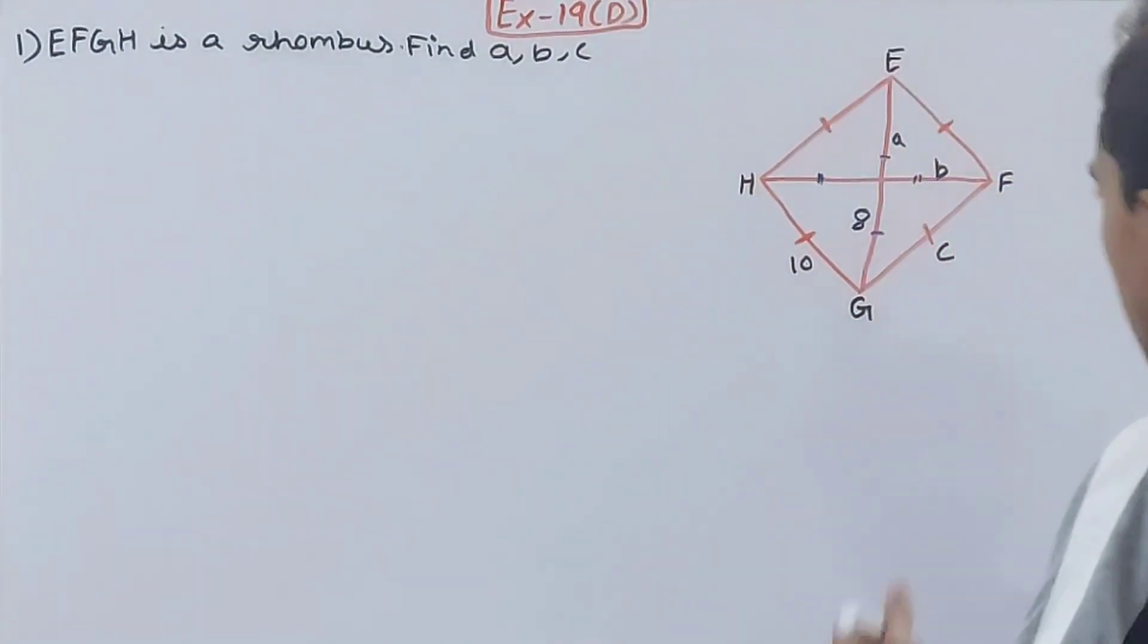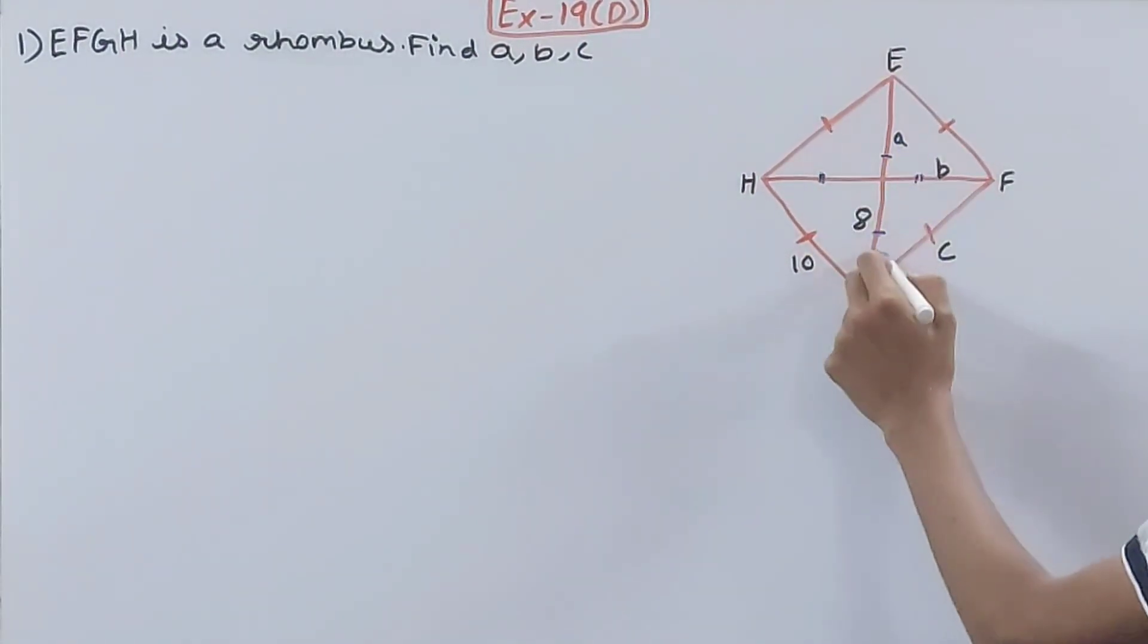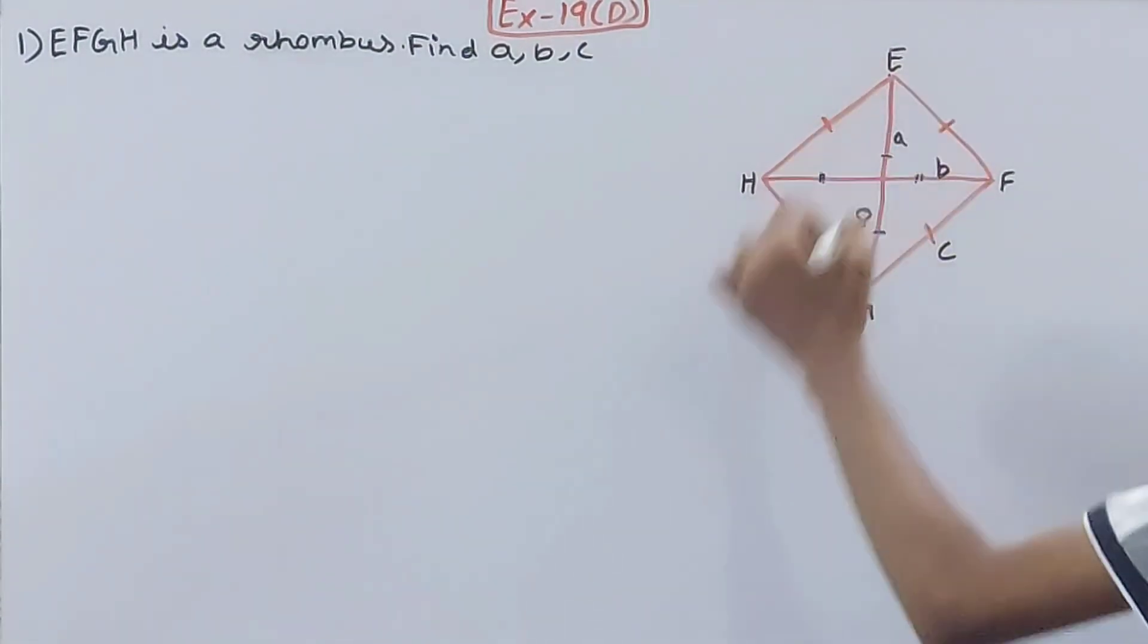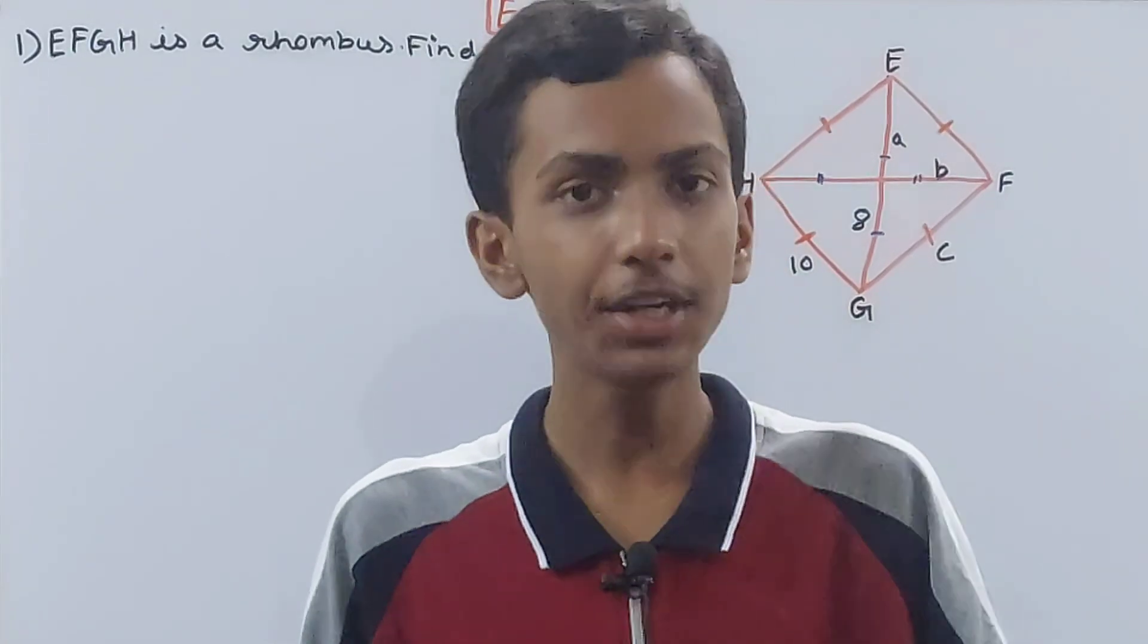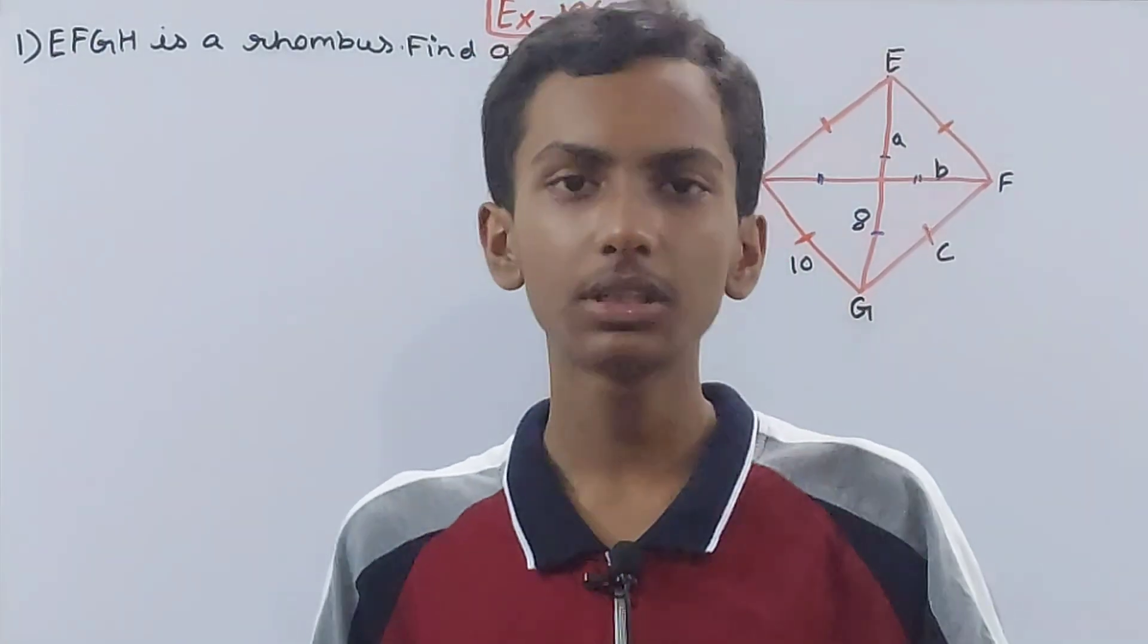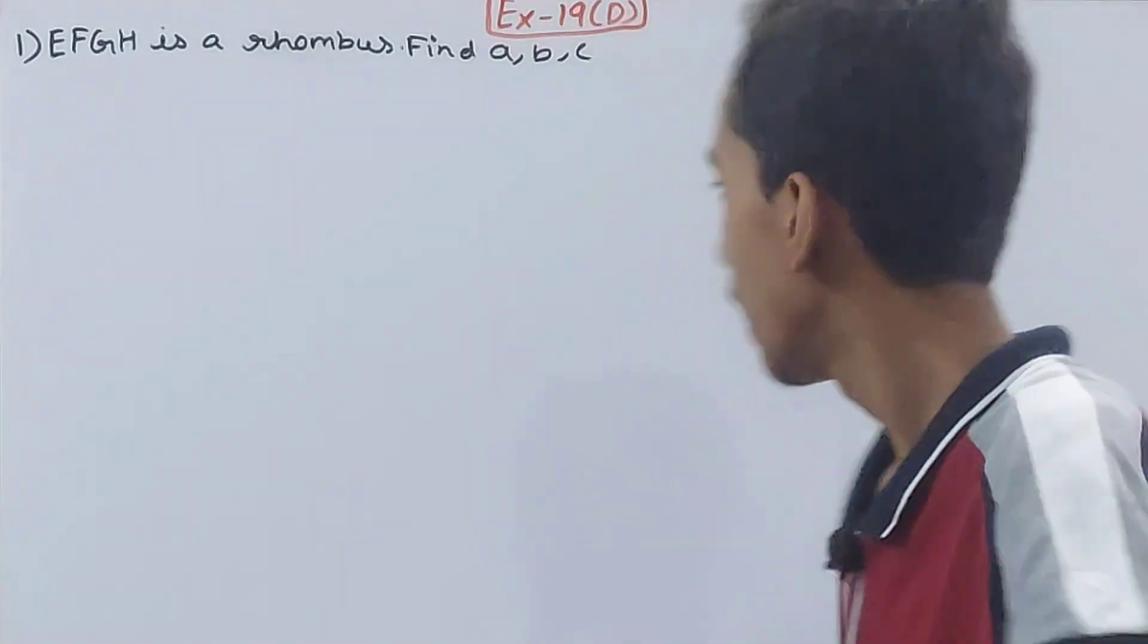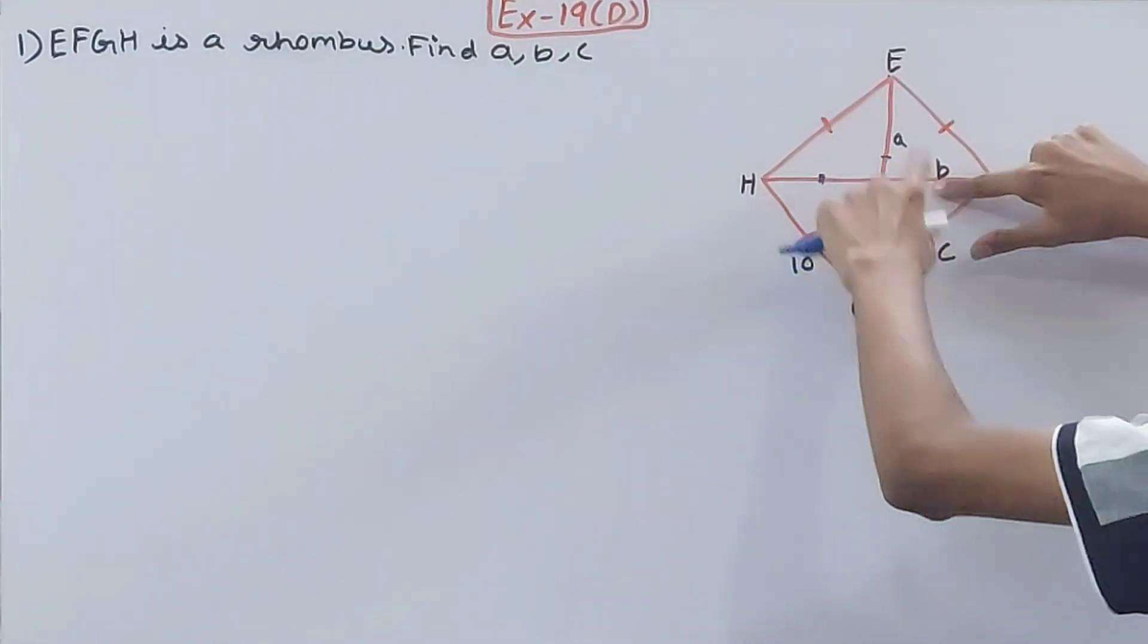Now look, in this diagonal EG, I know one part is 8 and the other part is a. So the other part will also be 8 units because the diagonals bisect each other, so both parts have the same measure.